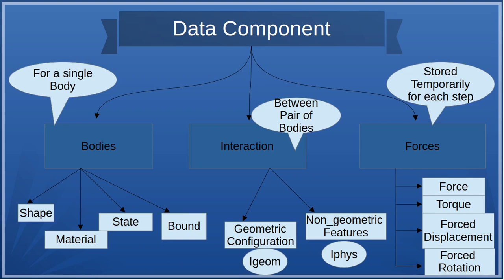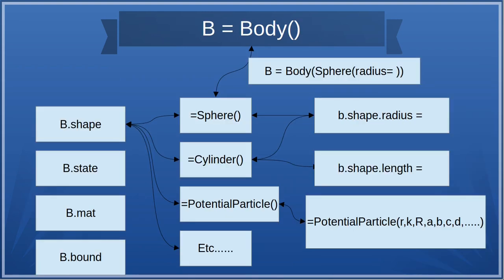In this video we'll focus on the body. So you have a scene and you create a body by referencing b as a Body object. You then add different components to it: shape, state, material, and bound. A body needs a shape — you can give different shapes depending on your problem. For example, Sphere with a radius attribute, or Slender which has radius and length. There are also potential particles for making irregular shape bodies.